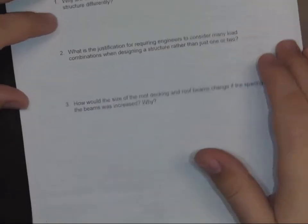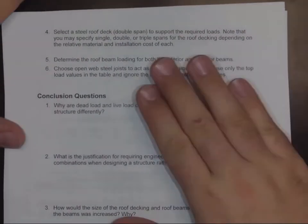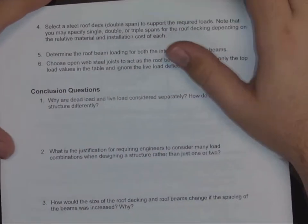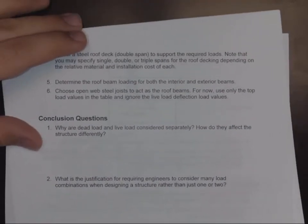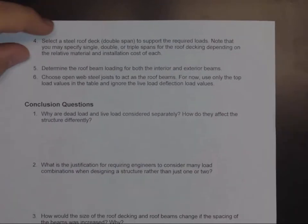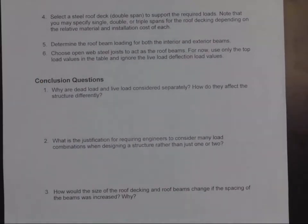Number four, select a steel roof deck to double span to support the loads. Note you may specify single, double, or triple spans for roof decking depending upon the installation and cost of each one. Number five, you're going to determine the roof beam loading for both interior and exterior beams, and then you're going to choose your open web steel joist. For now, use only the top load values in the table and ignore the live load deflection load values.